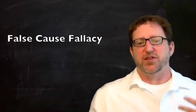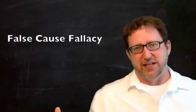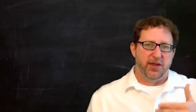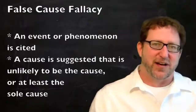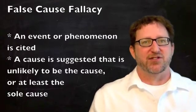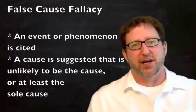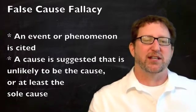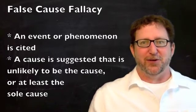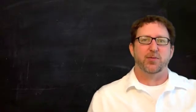Now, the fallacy of the false cause starts with some event or phenomenon. And this is how you can tell it from some of the other fallacies. Some event or fact is cited and then a purported cause is introduced. So a fact is cited and the cause is suggested. The problem here is that the cause that is suggested is not at all likely to be the cause. Sometimes it's because it might be one contributing cause, but there might be many causes of the event. And so the person is taking too simplified of an approach. In other cases, the purported cause might have no connection whatsoever to the fact or the phenomenon that's being discussed.